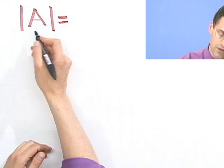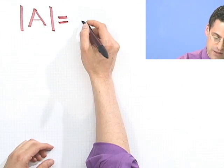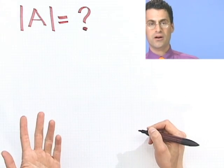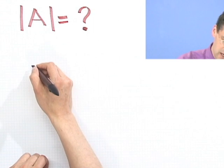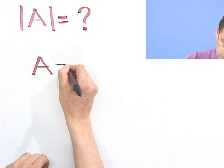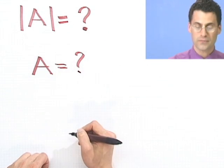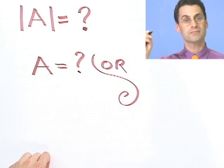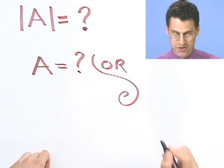So if I say to you that A is some value, let me call it a question mark, then what do I know? I know there are two possibilities, either A equals question mark, or A equals negative question mark.